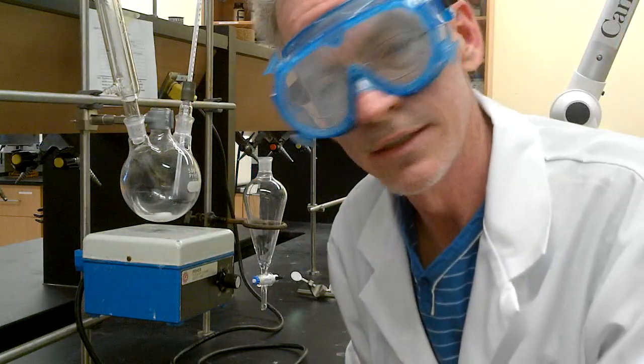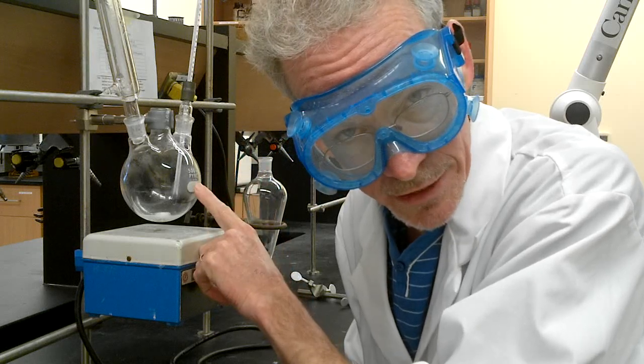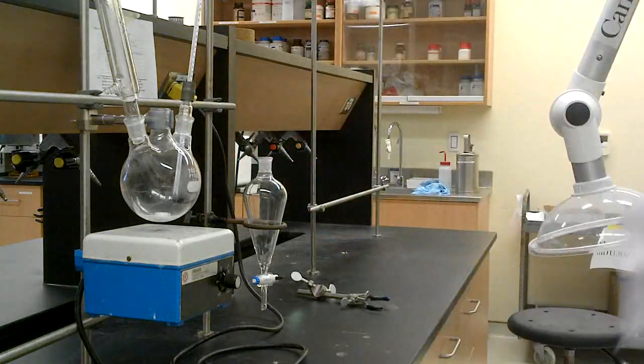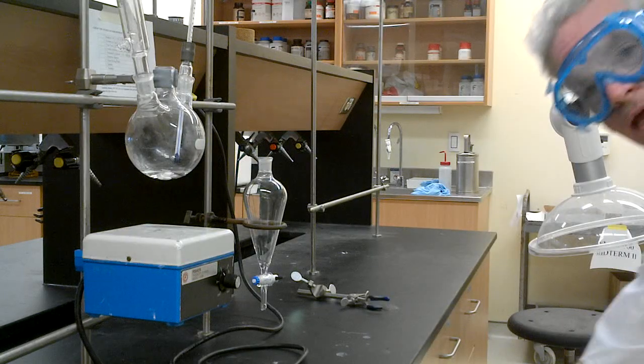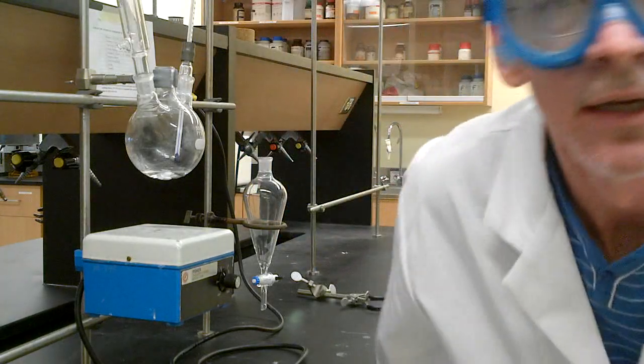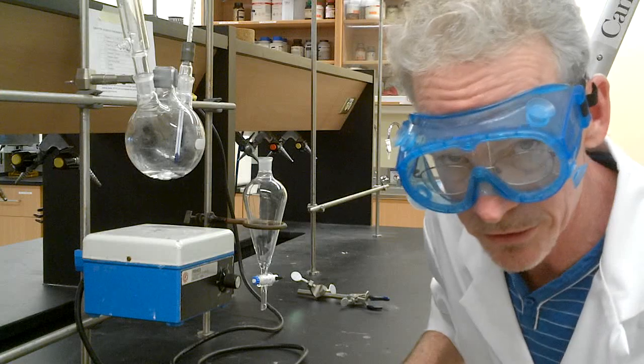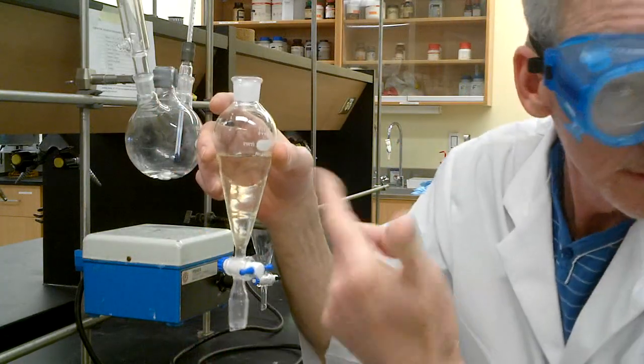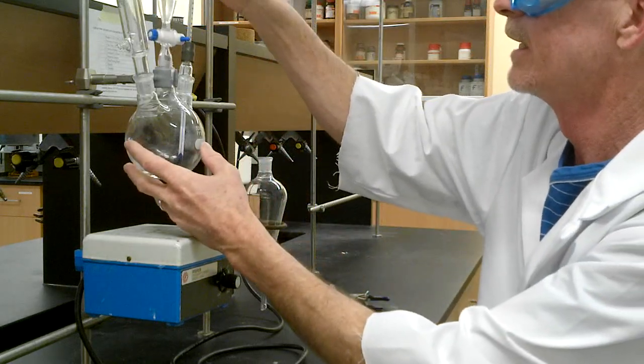Now, we're going to need the octanol and the glacial acetic acid and a sep funnel with some bleach in it. So I'll go get those. I've added the alcohol, the octanol and the glacial acetic acid. And in the fume hood, I've dispensed about 60 milliliters of bleach, sodium hypochlorite.